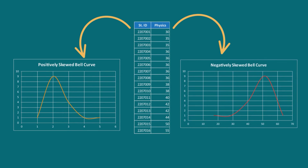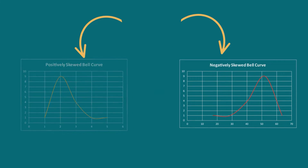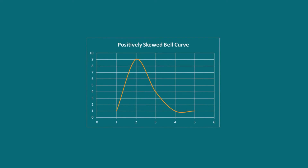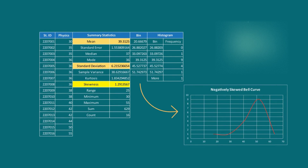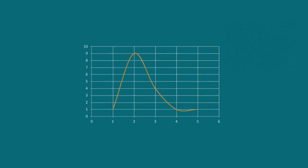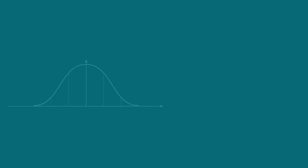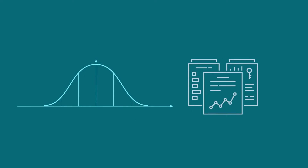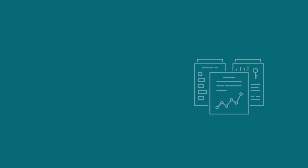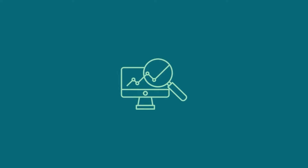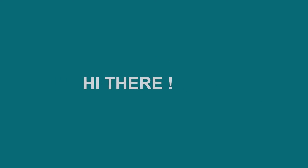Real-world data are rarely symmetrical in nature. To represent such asymmetric distributions, skewed bell curves are an essential tool offering visual indicators for quickly summarizing the dataset. Whether it's a lengthy tail showing outliers or a skewed peak indicating a dominant group, skewed bell curves can offer valuable insights into the data.